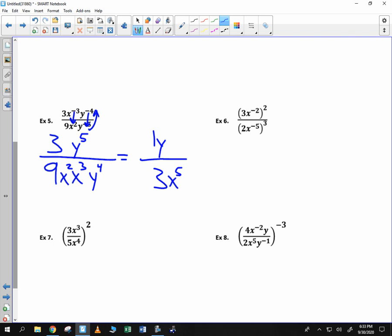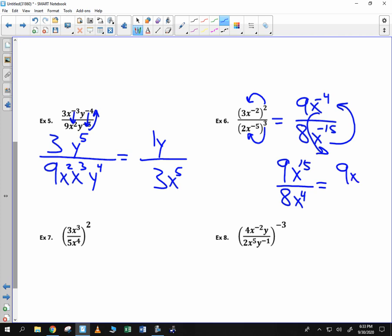For number 6, before we actually deal with these negative exponents, we need to square things first. We can't move them yet. If we square, we get 9x to the negative 4, and we get 2 cubed is 8x to the negative fifteenth. Move the exponents to where they're not, because they're negative. 9x to the fifteenth over 8x to the fourth. Now, you can simplify it. We have 9x to the eleventh over 8.